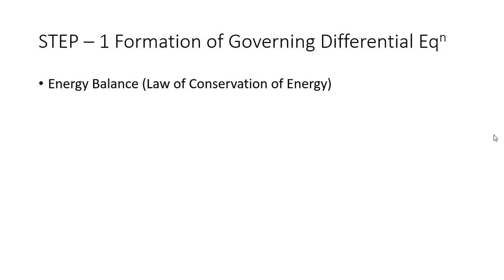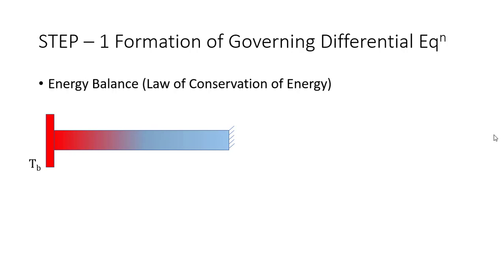In our problem it is given that initially the fin is at a temperature of 30 degree centigrade and suddenly we bring the base of the fin to 100 degree centigrade. As there is a temperature difference between the base of the fin and the entire fin, heat will transfer from the higher temperature to the lower temperature. As a consequence, heat will flow from the base to the tip of the fin and the temperature of the fin rises gradually.